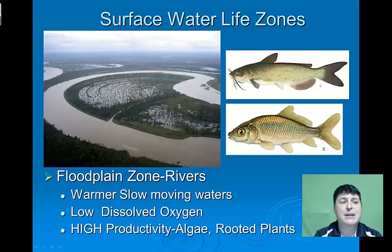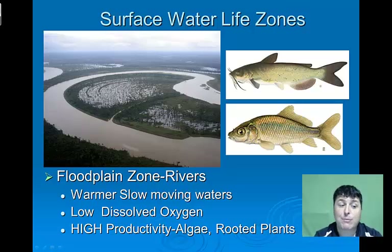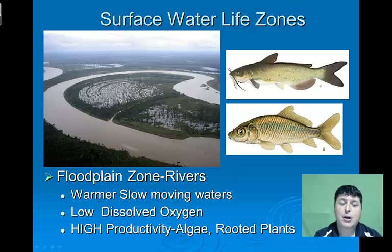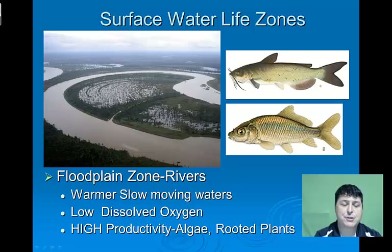Finally, when we move into the floodplain zone, we'll still have warmer and even slower-moving waters with much less dissolved oxygen. But there will be plenty of productivity with both algae and rooted plants. We'll see catfish and the like supported in this particular environment.